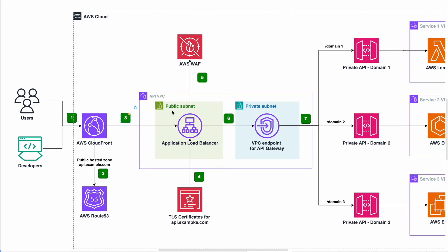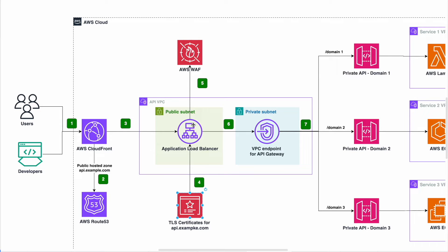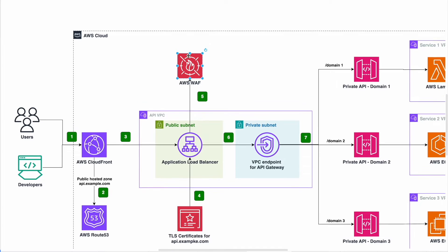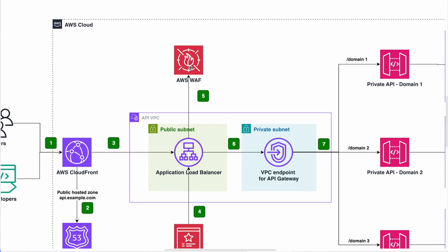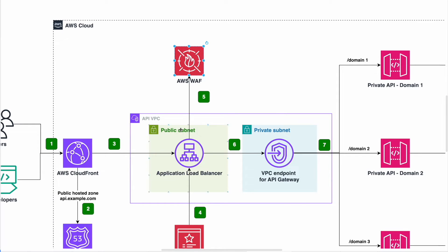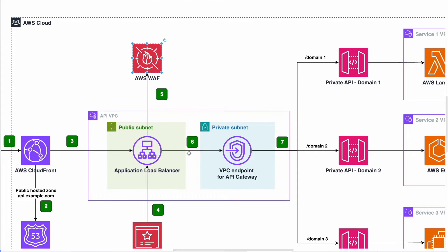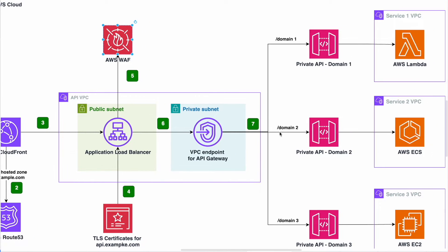Requests go to an Application Load Balancer inside a VPC. This load balancer sits in a public subnet — it's the only thing exposed to the world. It is protected by AWS Web Application Firewall, which lets you configure rules to detect suspicious requests and reduce the risk of attacks on your critical services.